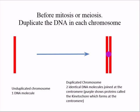Before mitosis or meiosis, remember that you have to duplicate the DNA in each chromosome so that the resulting cells from this process will have all the DNA they need to survive.